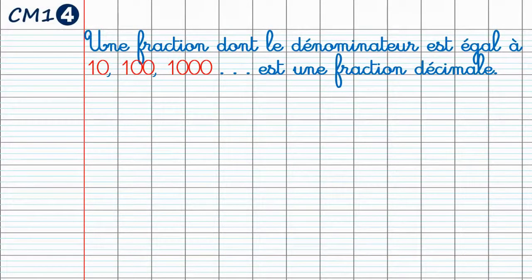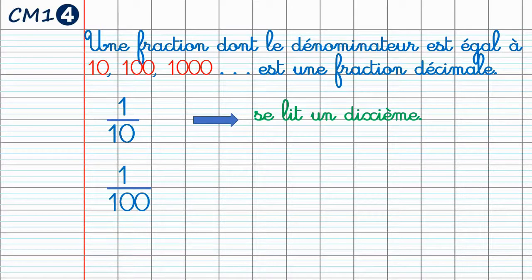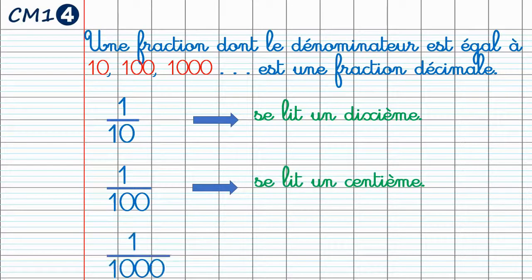Une fraction dont le dénominateur est égal à 10, à 100, à 1000 ou à tout autre multiple de 10 est appelée une fraction décimale. Cette fraction se lit 1 dixième. Celle-ci se lit 1 centième. Et cette dernière se lit 1 millième.